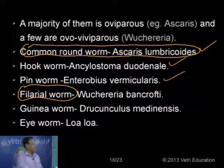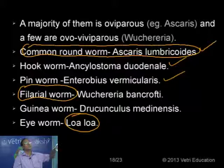The smallest roundworm lives in the eye — called Loa loa. It also causes some ocular distress and damage to the eye. These are some of the examples of the common parasitic roundworms found in our body.